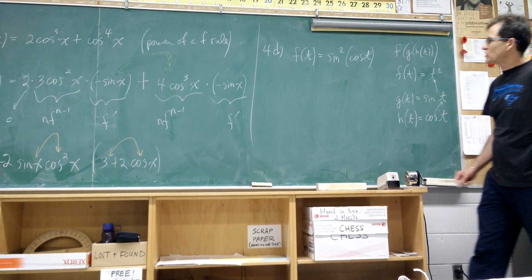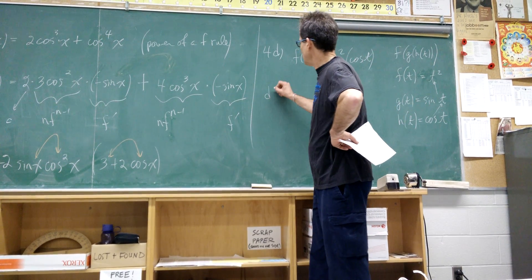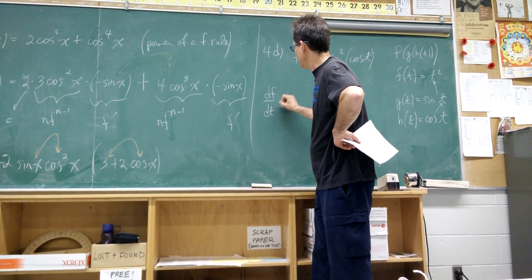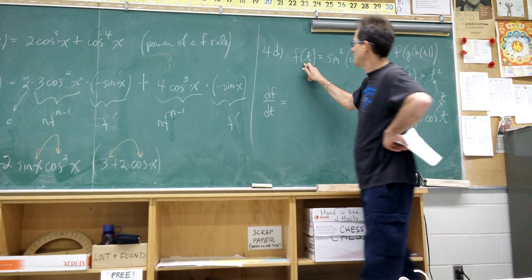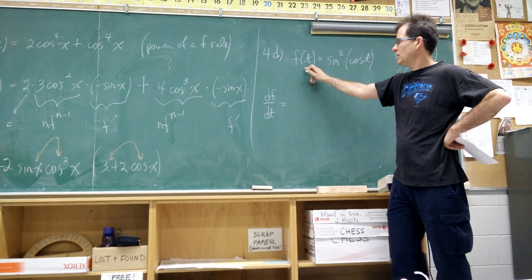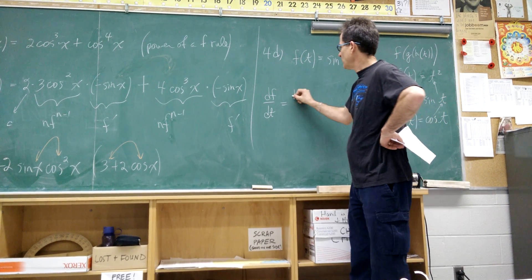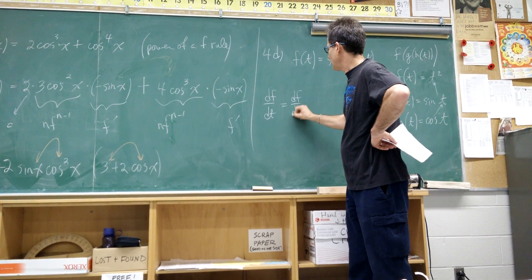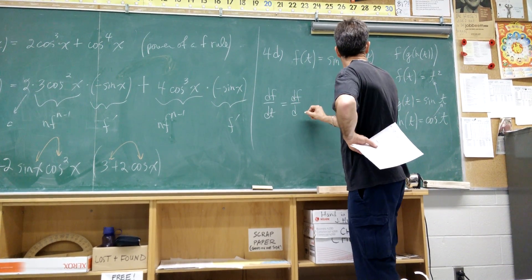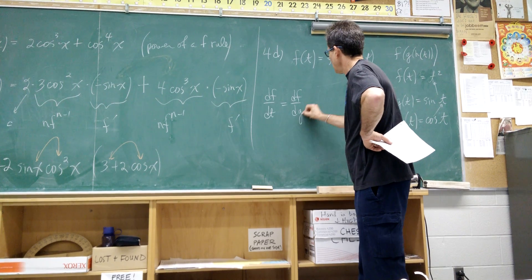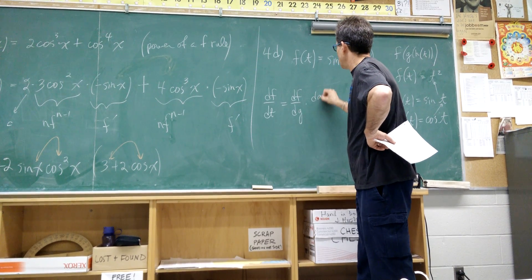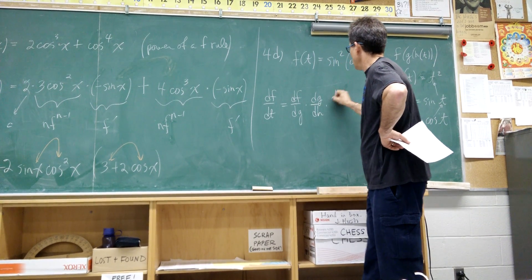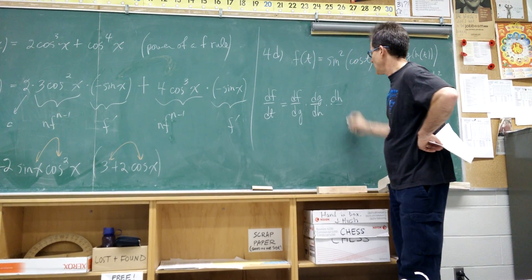So this is the composite of a composite function. The chain rule gives us: we want to find df/dt, the derivative with respect to t. So this is df/dg times dg/dh times dh/dt.